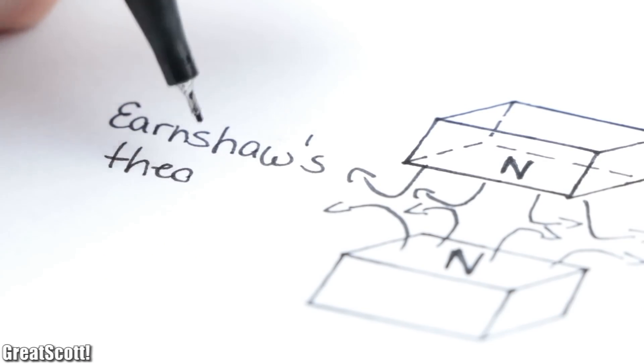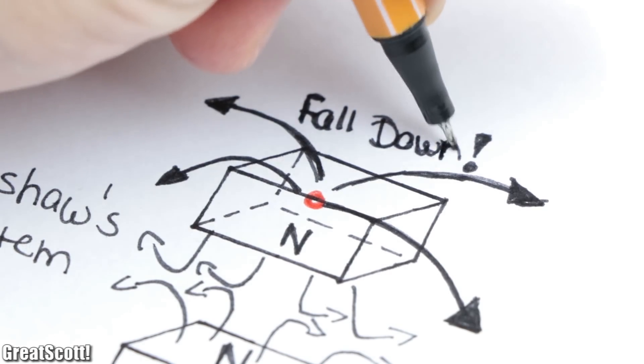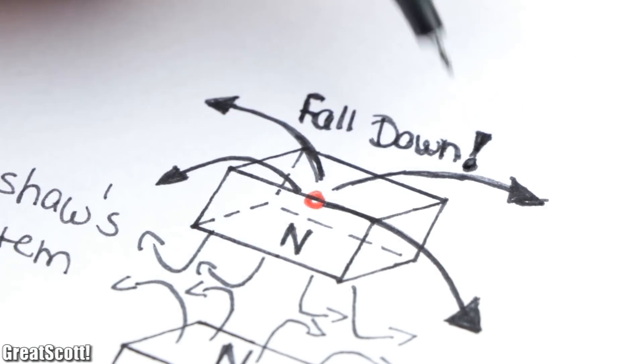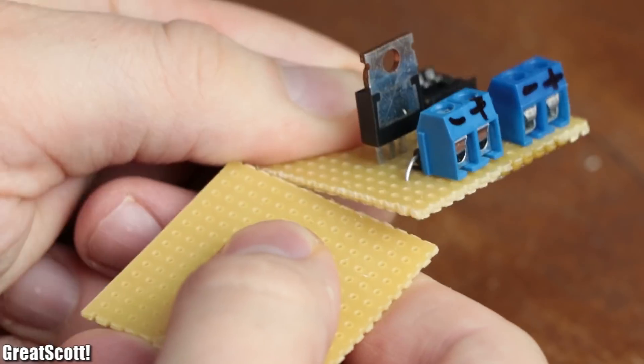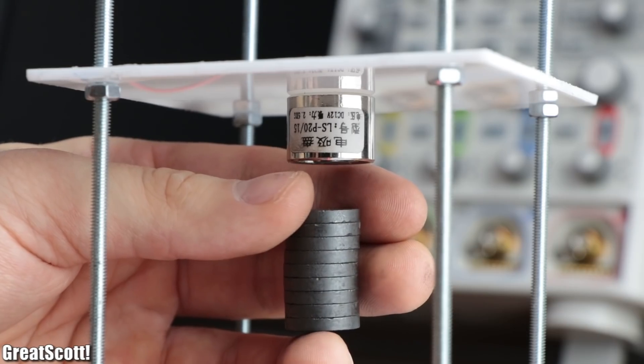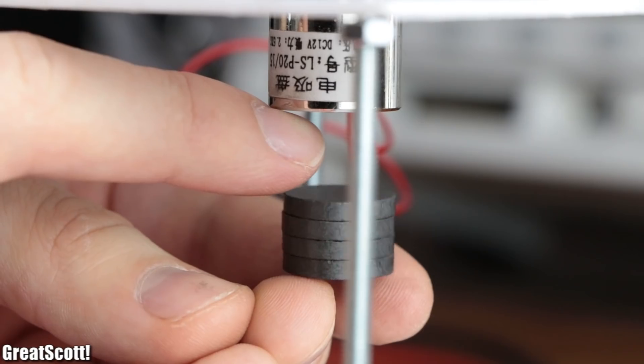The problem of this setup is described in Earnshaw's theorem, which states that there is no equilibrium position in a static electric or magnetic field. So in this video we are going to try to work around this theorem and hopefully find out how we can achieve magnetic levitation. Let's get started.